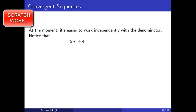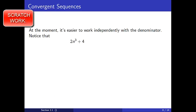First, notice that 2n³+4 ≥ 2n³ since adding 4 makes any quantity larger. Next, 2n³ ≥ n³ since doubling a natural number makes the quantity larger. Furthermore, n³ ≥ n since cubing a natural number increases the quantity. Finally, n ≥ N — this is simply an assumption we make due to the condition given in the definition of a convergent sequence.